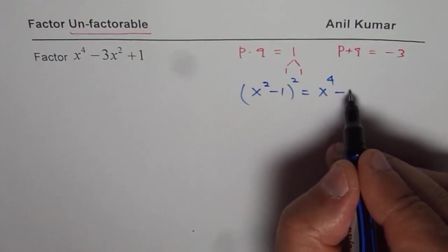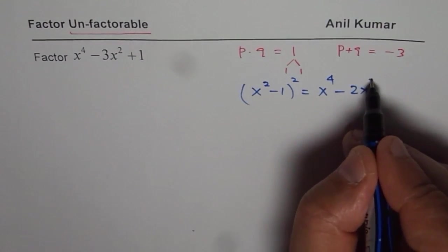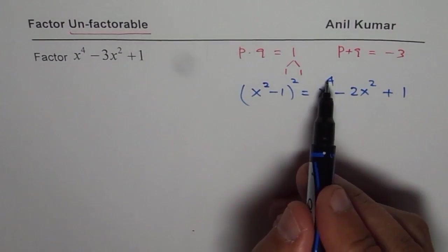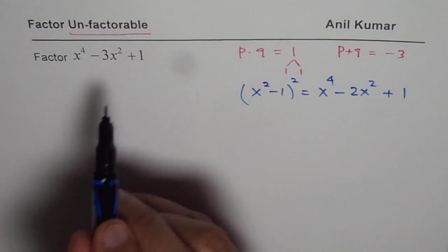(x^2 - 1)^2 is x^4 - 2x^2 + 1. But what do we have here? We have x^4 - 3x^2 + 1.